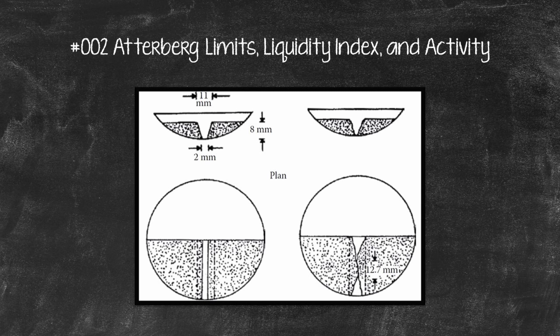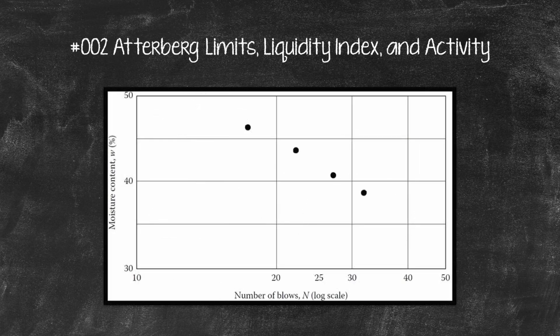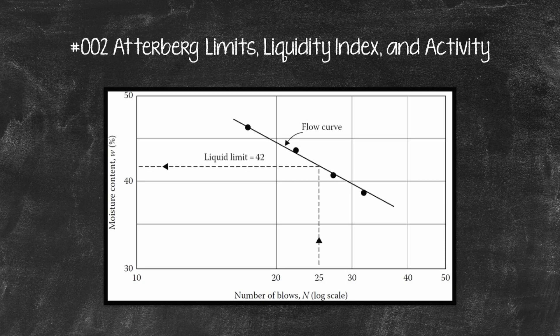It is difficult to adjust the moisture content in the soil to meet the required 12.7 millimeters closure of the groove in the soil pat at 25 blows. Hence, at least three tests for the same soil are conducted at varying moisture contents, with the number of blows required to achieve closure varying between 15 and 35. The moisture content, in percent, and the corresponding number of blows are plotted on semilogarithmic graph paper. The relationship between moisture content and log N is approximated as a straight line, referred to as the flow curve. The moisture content corresponding to N = 25, determined from the flow curve, gives the liquid limit of the soil.